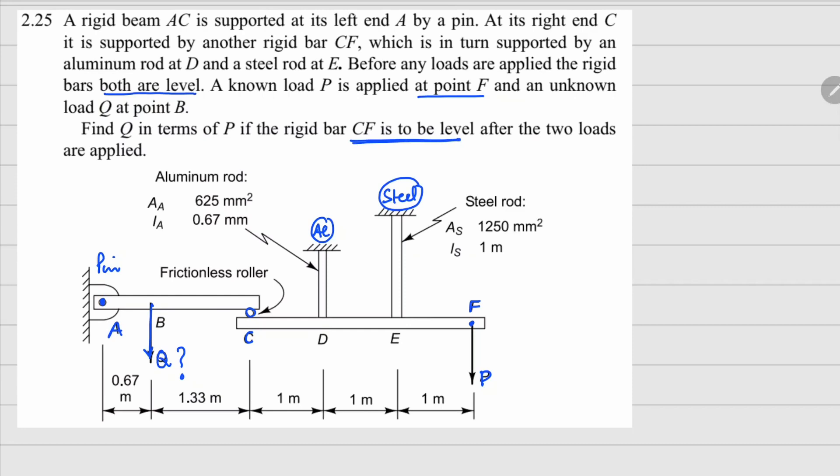So let's analyze your CF member. Now in CF there will be these forces coming from these two rods, one force here, one force here. Let's call this FE, this one as FD. Because of this roller contact on this CF bar, there will be a force coming downward as a normal reaction.